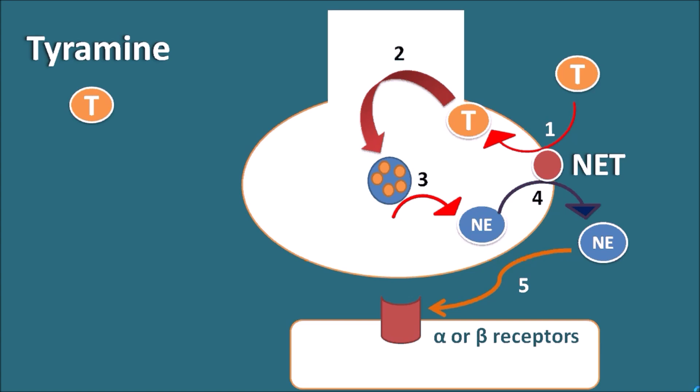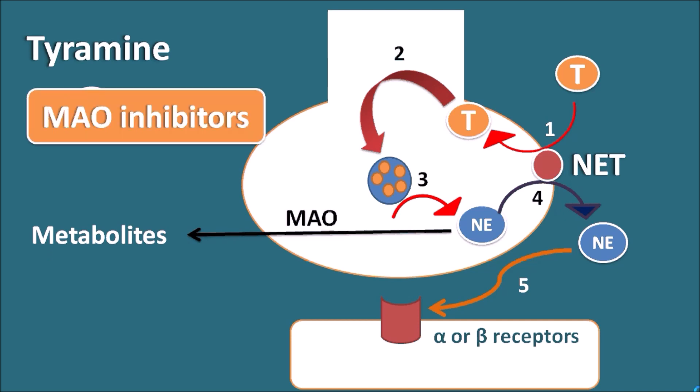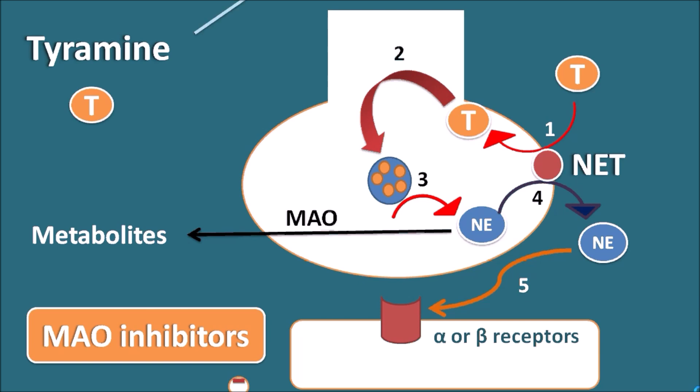The norepinephrine released from storage vesicles can also be metabolized by the enzyme MAO — monoamine oxidase. By the action of MAO, norepinephrine is converted into metabolites. When tyramine is given along with MAO inhibitors, MAO inhibitors inhibit this metabolism, so norepinephrine is not metabolized within the nerve terminal and is more available for leaking out via exchange with tyramine. In this way, MAO inhibitors increase the leakage of norepinephrine by inhibiting its metabolism, thereby increasing the action of tyramine.